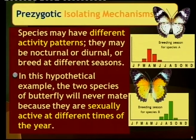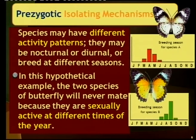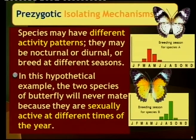One important prezygotic isolating mechanism is that species may have different activity patterns. For instance, one type of butterfly or moth might be active at a certain time — one nocturnal, the other diurnal. The example on the board shows two species where the breeding seasons don't overlap: one might prefer slightly warmer weather, the other slightly colder weather.